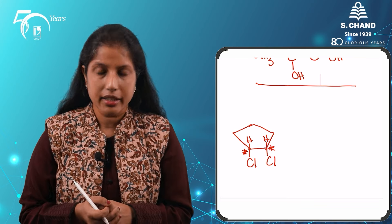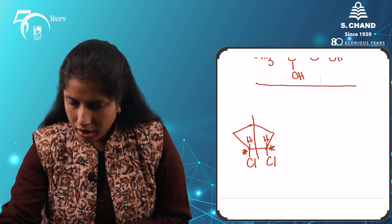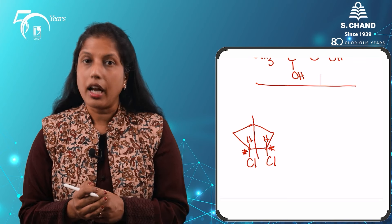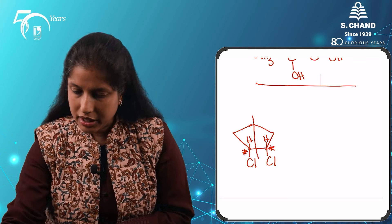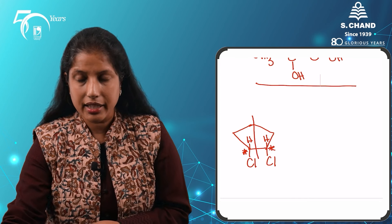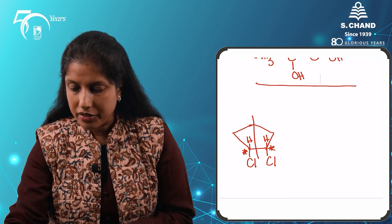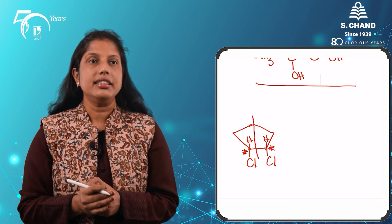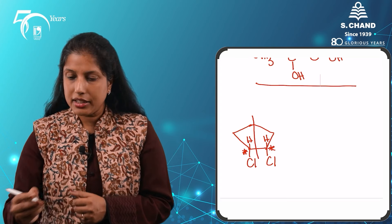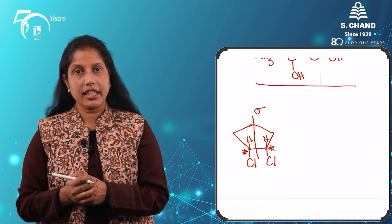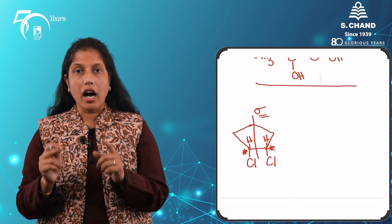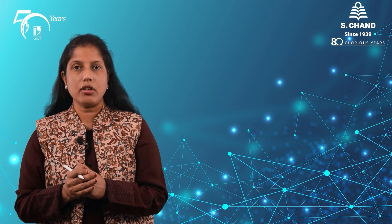Why? Because of the presence of an internal mirror plane. If we draw a line from the top carbon atom all the way down to the bottom, we divide this molecule. The part of the molecule on the left side of this line is exactly the mirror image of the part on the right side. This imaginary line is known as its internal mirror plane, commonly denoted by the small Greek letter sigma. All molecules which show the presence of this internal mirror plane are going to be achiral.